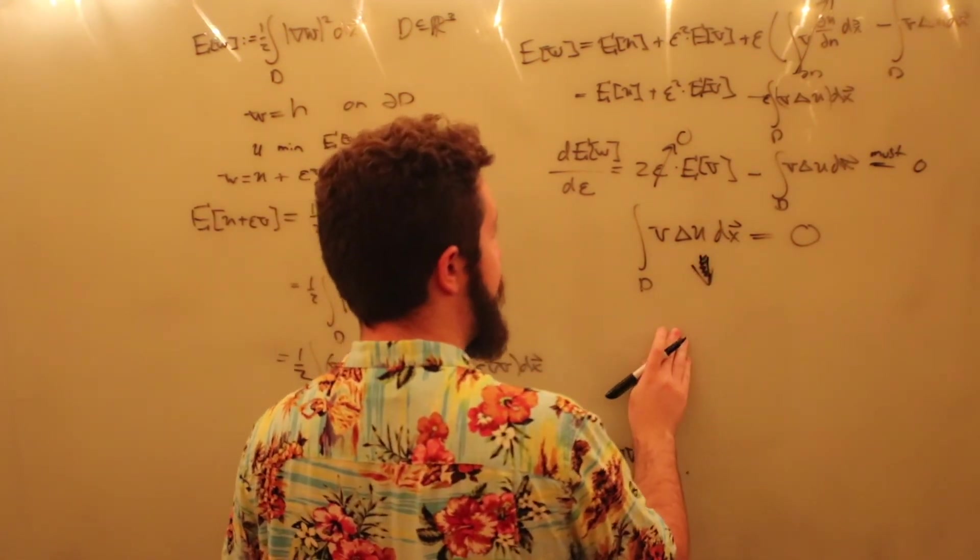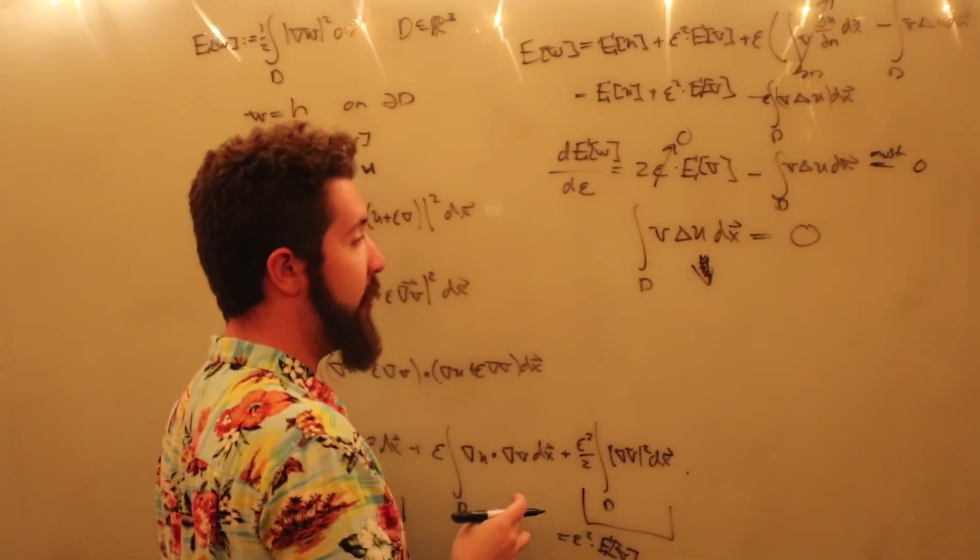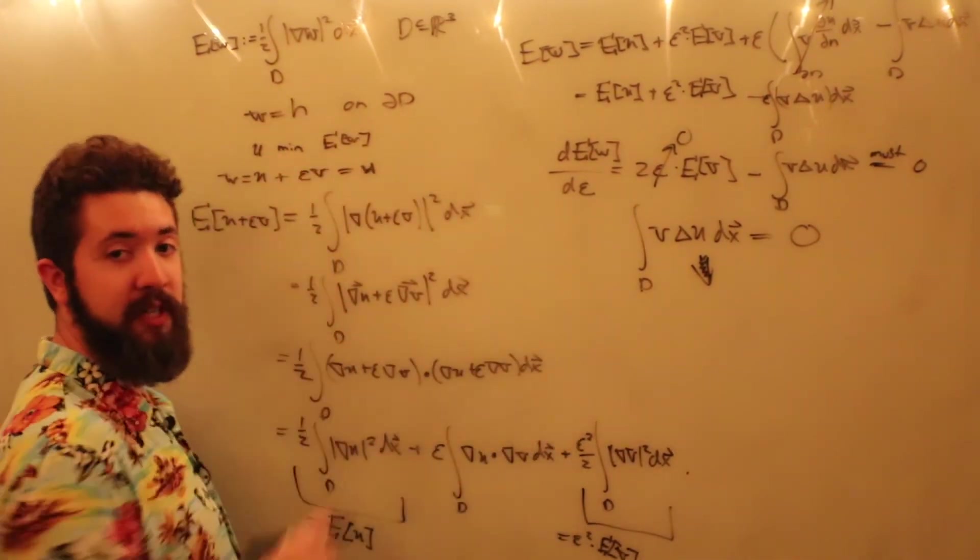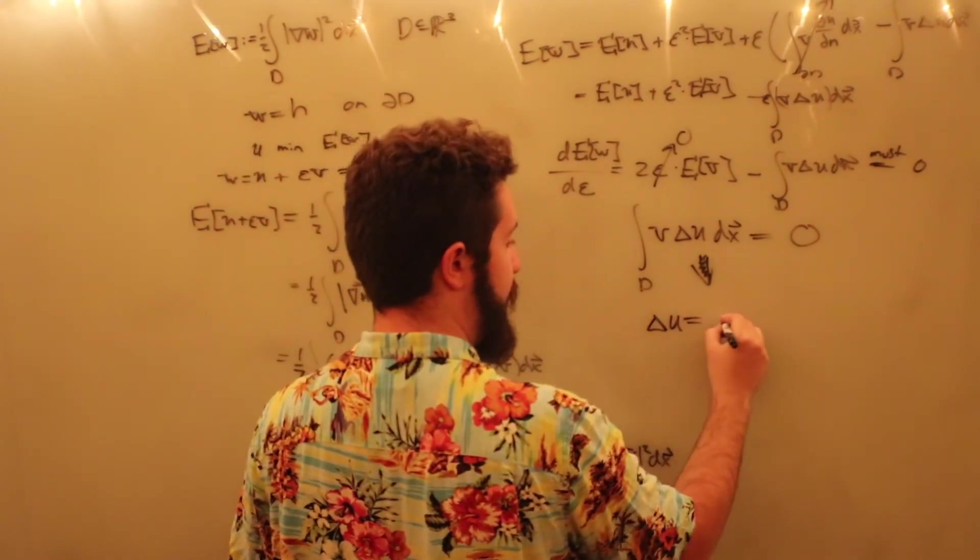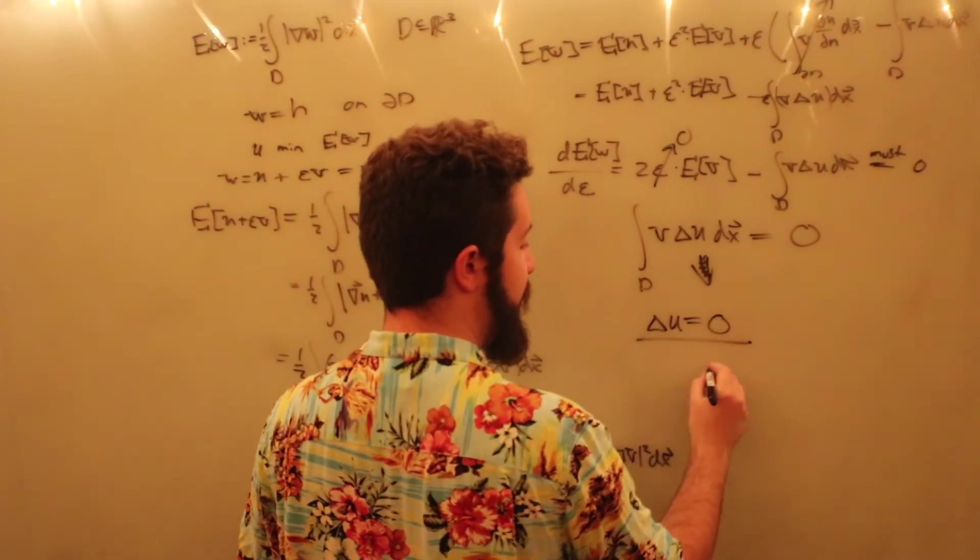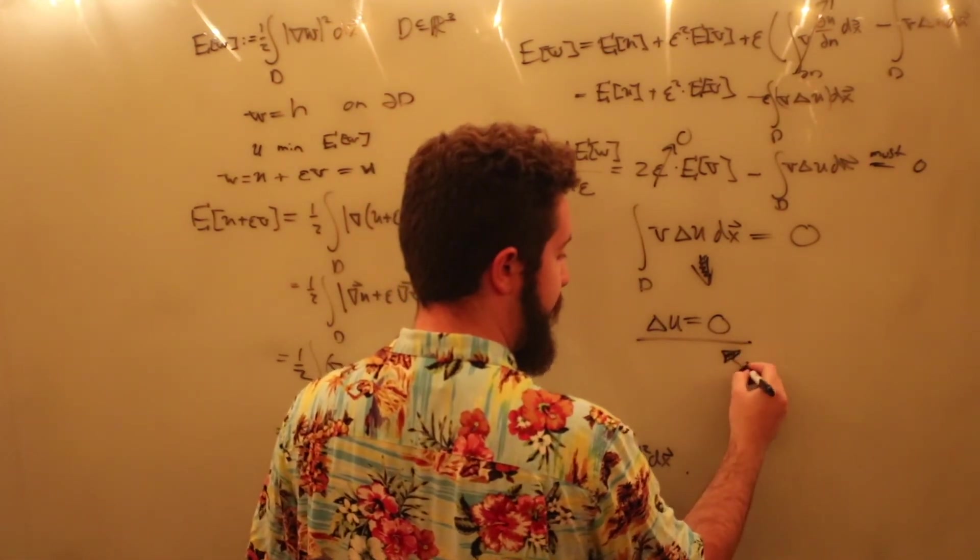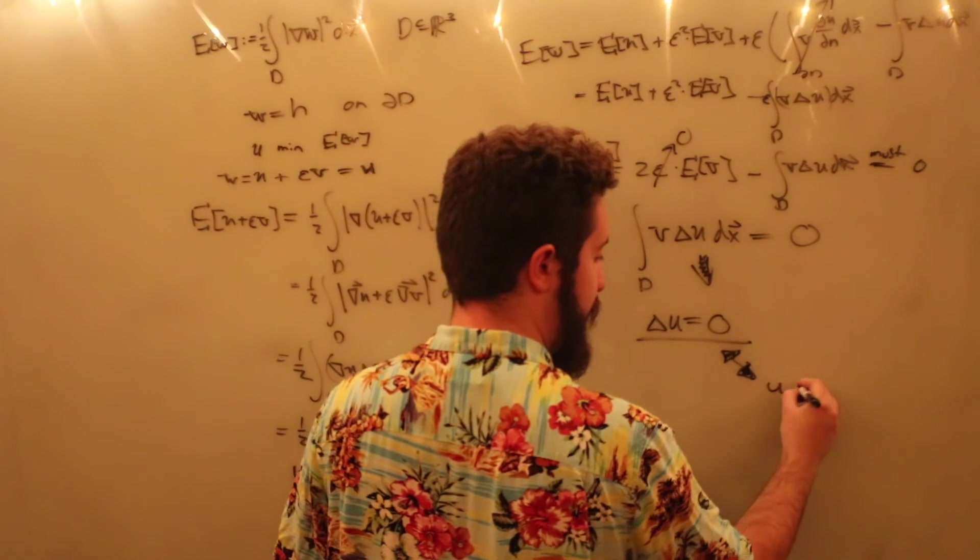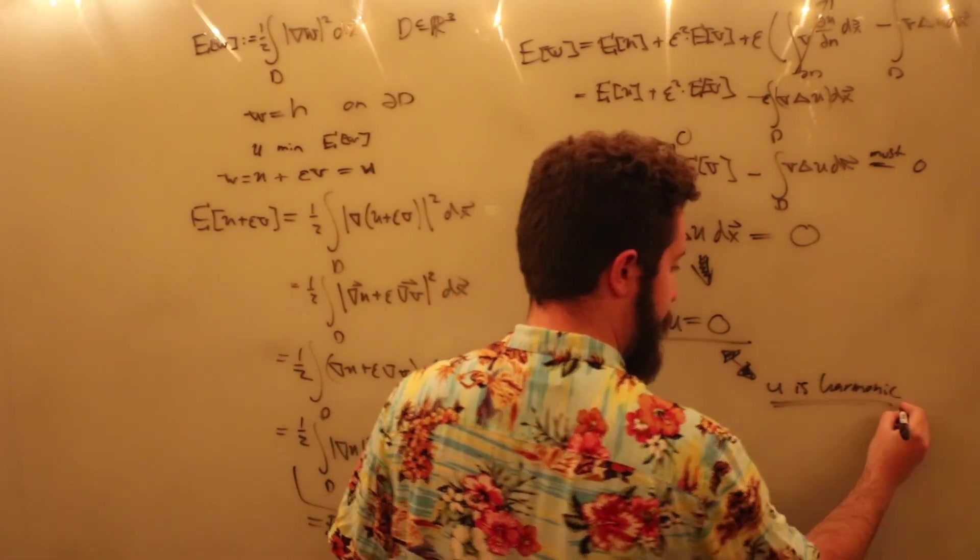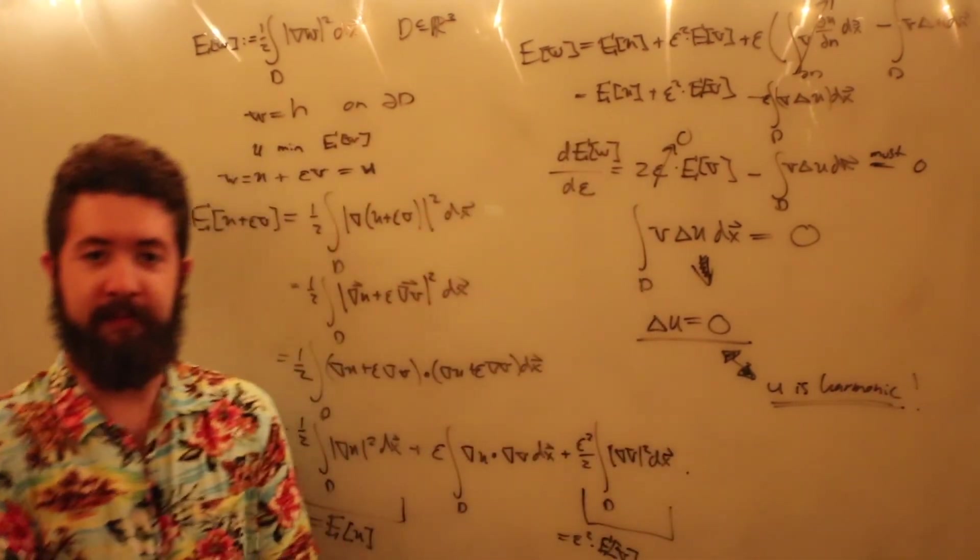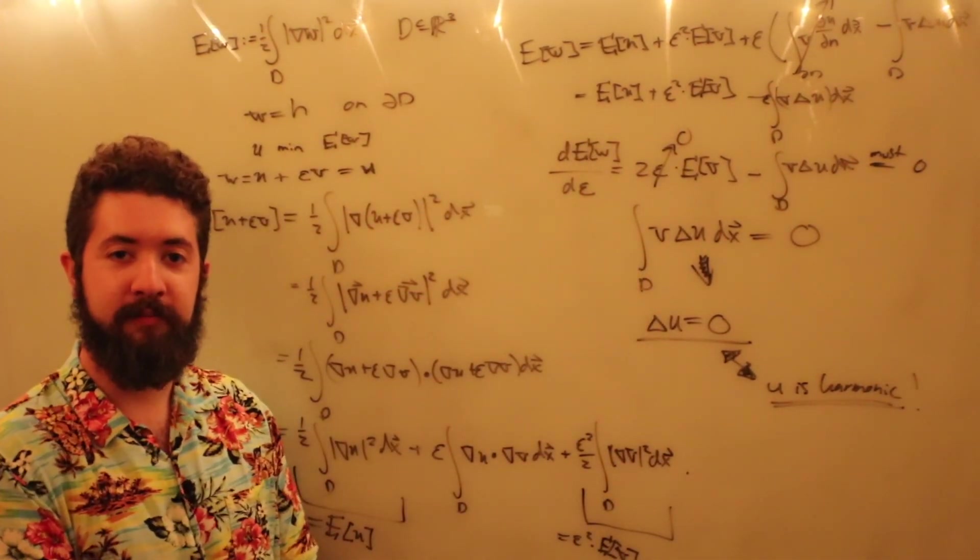Thus we have that the function u, which is what we wanted to learn about, minimizes the energy integral exactly when the Laplacian of u is equal to zero, or this is to say u is a harmonic function. Harmonic functions minimize the energy integral.